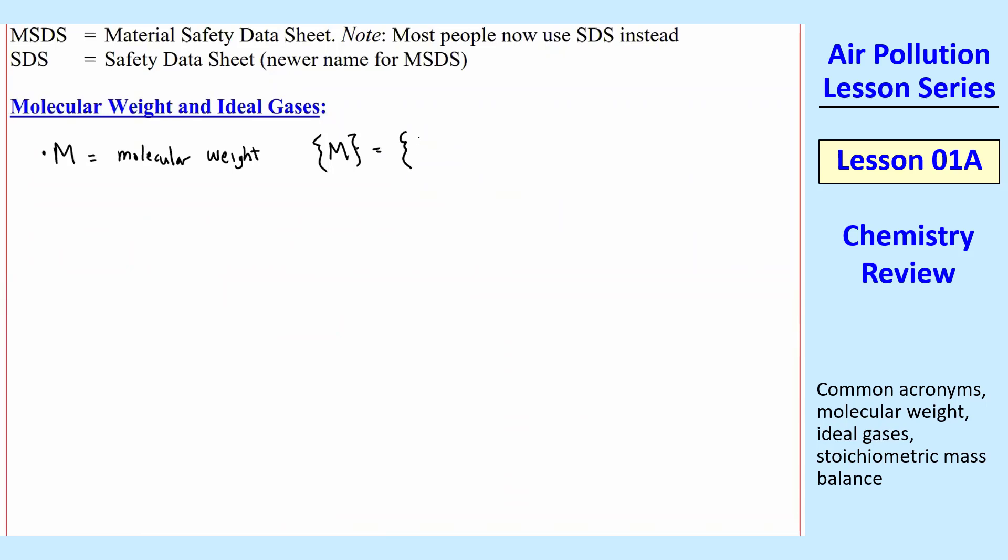So the dimensions of M, capital M, are mass per mole. And then I use square brackets to mean the units of. So the units are typically kilogram per kilomole or gram per mole, a kilomole being a thousand moles, just like kilogram is a thousand grams.